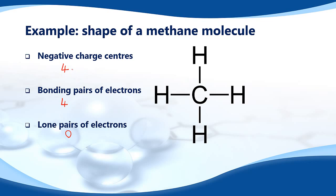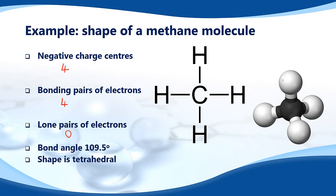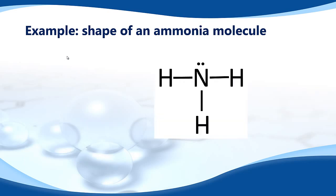With four negative charge centers, four bonding pairs, and zero lone pairs, the bond angle is 109.5 degrees and the shape is tetrahedral. Here's a 3D representation of a methane molecule — between each bond there is a bond angle of 109.5 degrees. By taking this tetrahedral shape, the repulsion between electrons in the bonds is minimized.